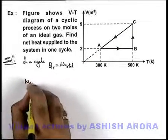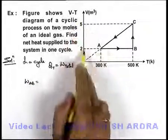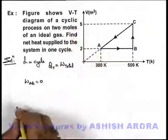So if we calculate work done in the process A-B, we can state that in process A-B volume is constant, so work done can be directly written as zero.